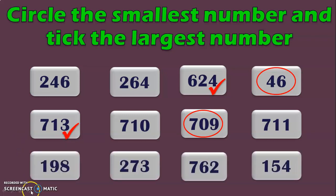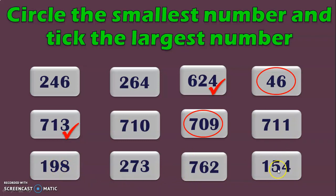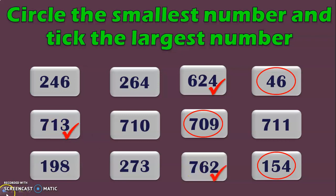One last example: we have 4 three-digit numbers with 1, 2, 7 and 1 in the hundreds place. To identify the smallest, compare 198 and 154 since 1 is the smallest hundreds digit. Move to the tens place and compare 9 and 5 — we know 5 is lesser than 9, so 154 is the smallest. Next, to find the greatest, compare the remaining numbers' hundreds place: we see 2 and 7. Since 7 is greater than 2, 762 is the largest number.